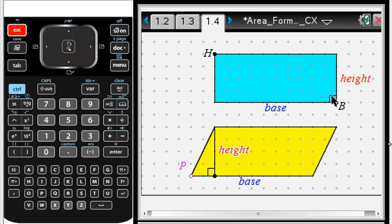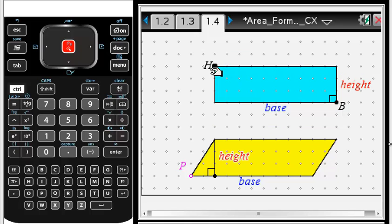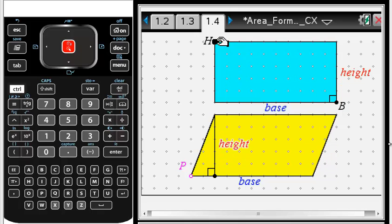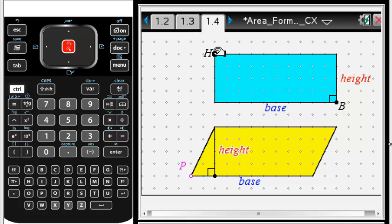Press escape. You can also do the same with H, move so that there's a pac-man at H, control click, move up or down and the height changes but is the same for both the rectangle and the parallelogram. Press escape.